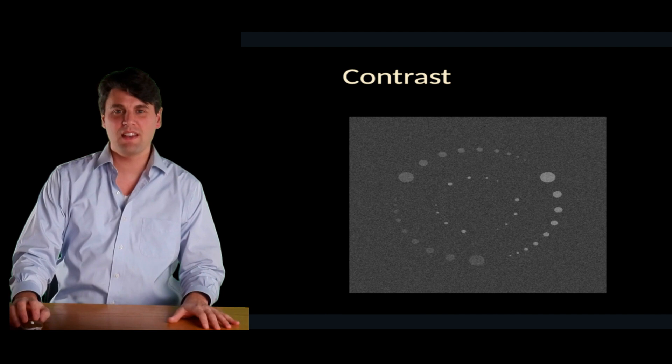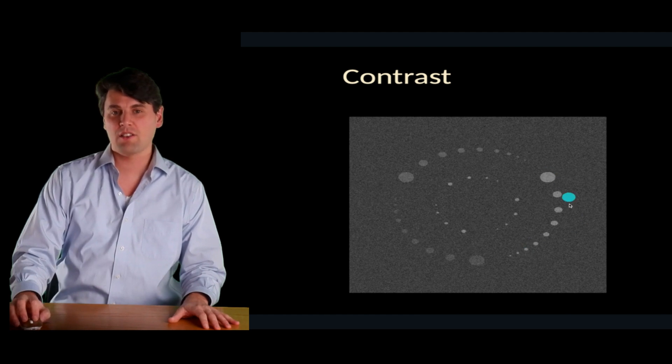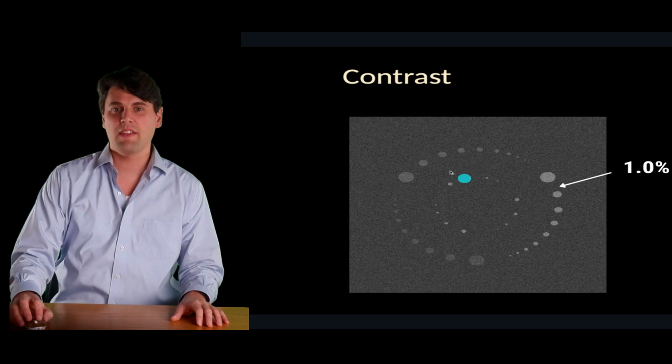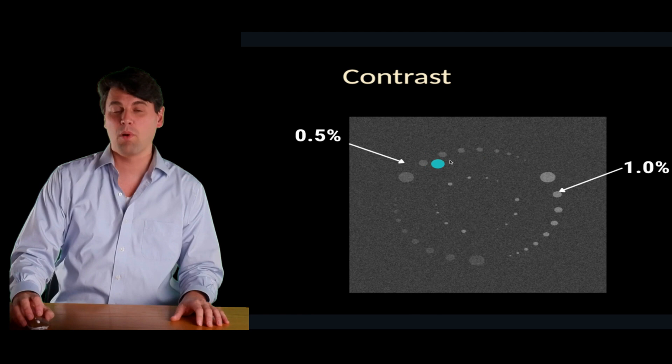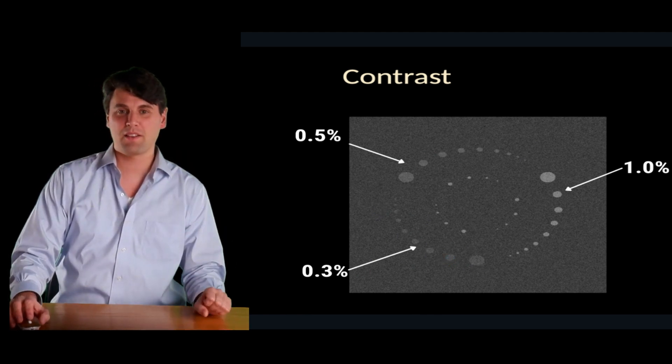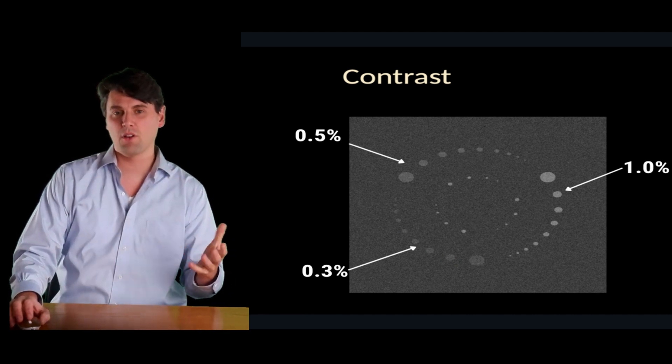This is a phantom we often use in CT imaging, where you can see different lesions and how well they stand out from the background. These lesions here are actually 1% different in their attenuation values for our CT image, and we call that 10 Hounsfield units. And then these up here are actually 5 Hounsfield units or 0.5%. And over here, we're talking about 0.3% or 3 Hounsfield units in comparison for those lesions with respect to the background. The question is, if you had a relatively small lesion which is relatively low contrast, would you be able to differentiate that in your CT image?